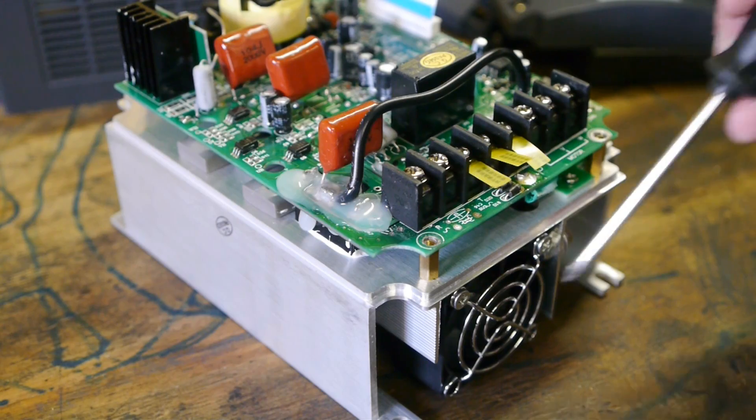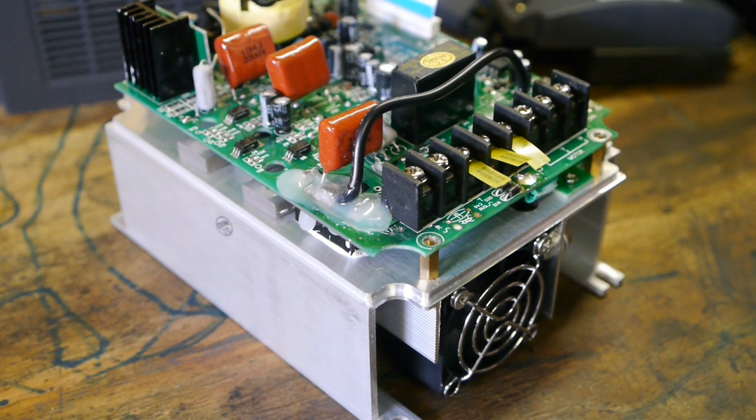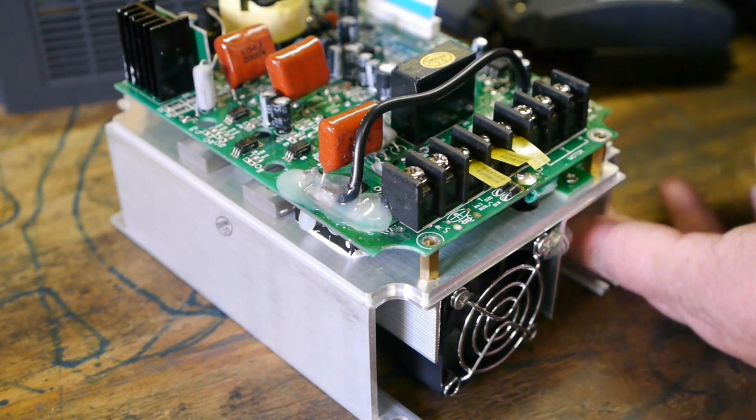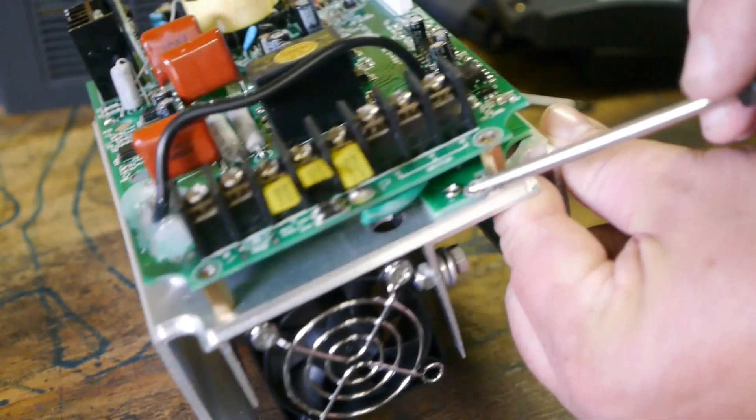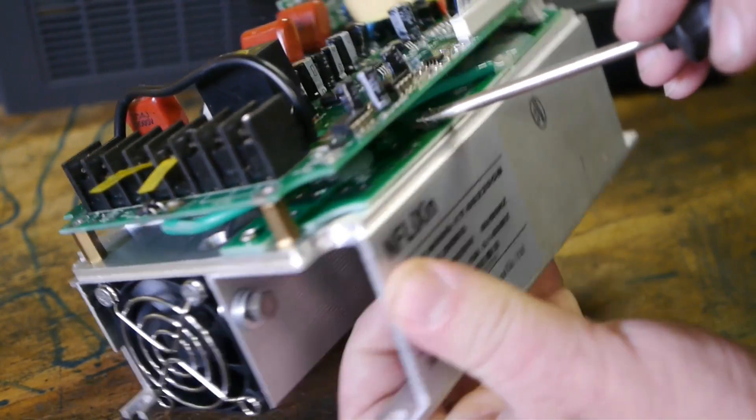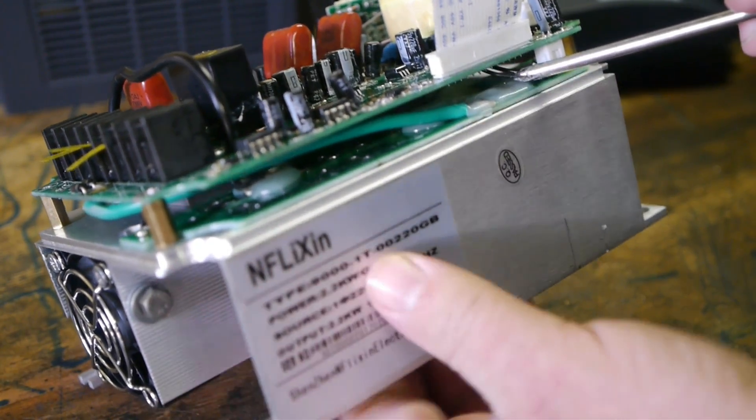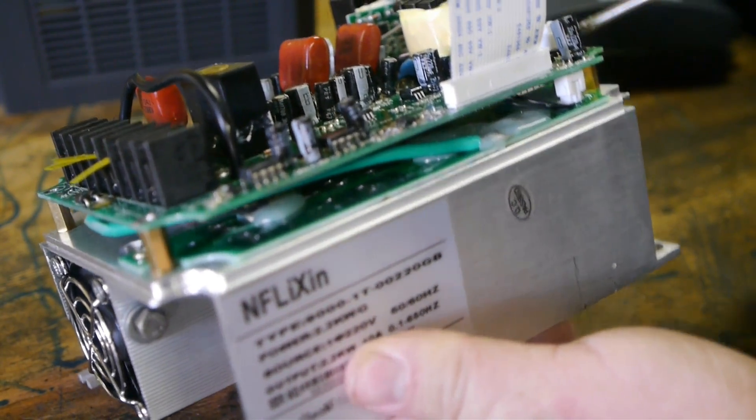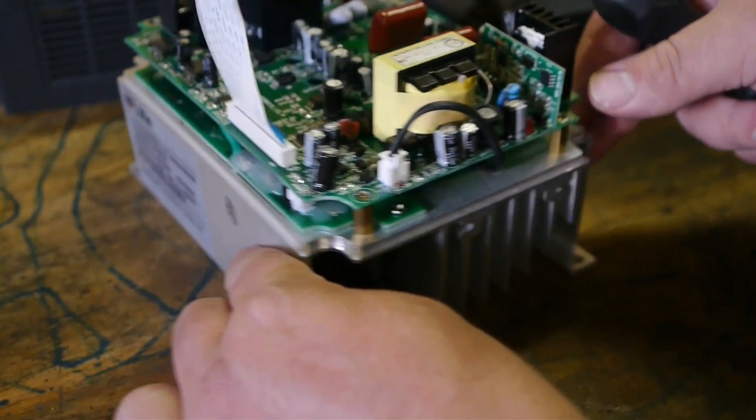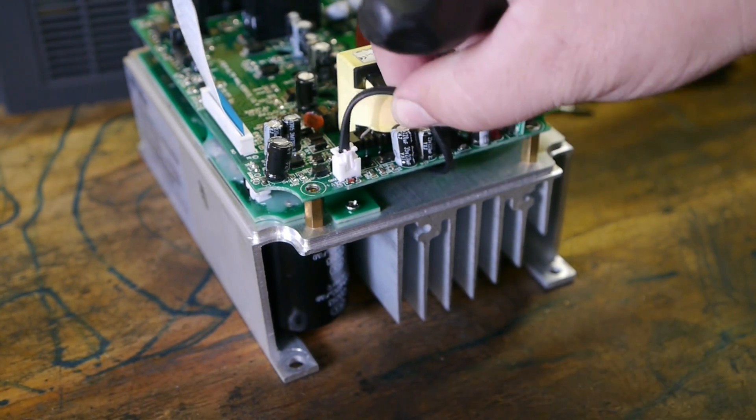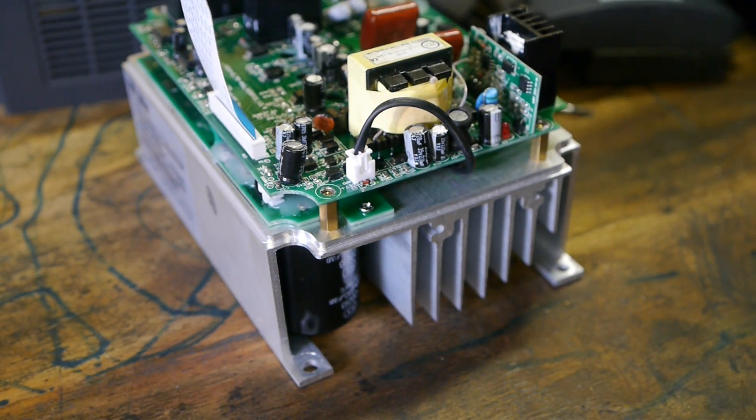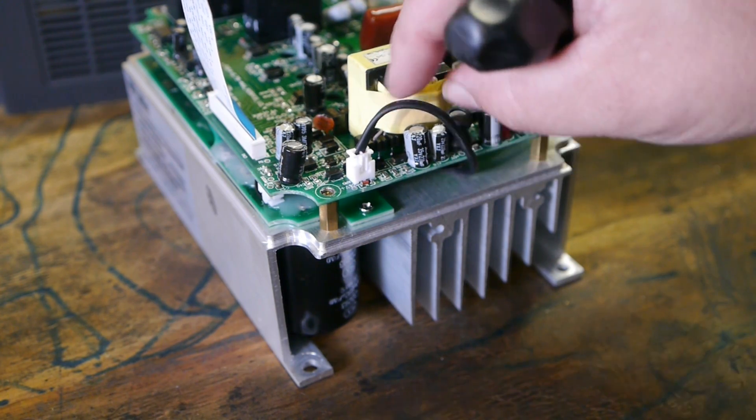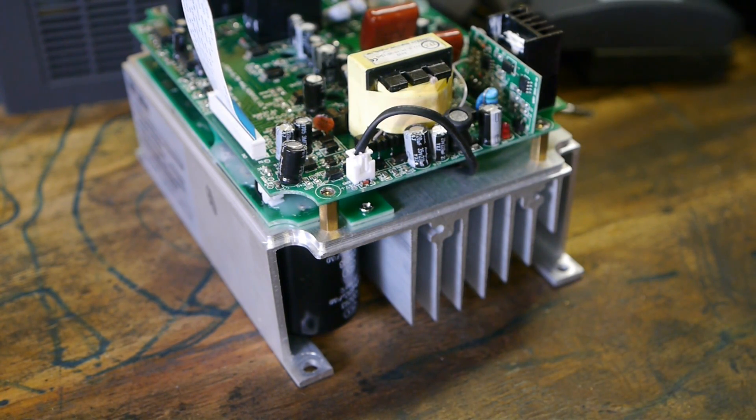So here's the fan, the source of my noise problems. And its cable runs between these two circuit boards, all the way to the top of the VFD, and it ends up here. It's only a 2-lead cable, so it's not a speed controlled fan.